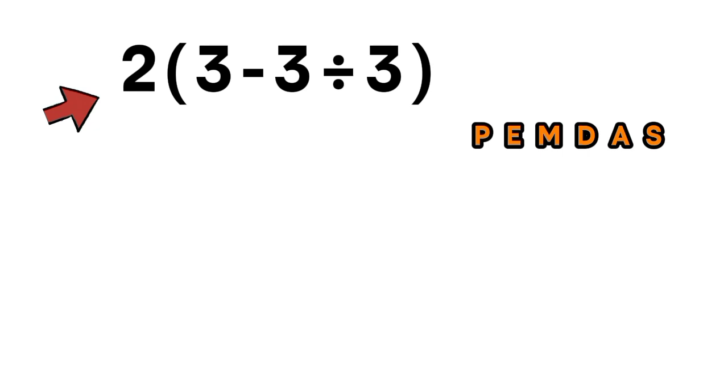So here, first, we have to handle this parenthesis. Inside the parenthesis, we have one subtraction and one division. According to PEMDAS, we first do the division. So, 3 divided by 3 is equal to 1. Now, the expression becomes 2 times 3 minus this 1. And 3 minus 1 is just 2. So this becomes 2.